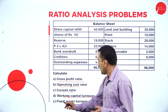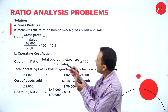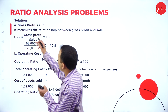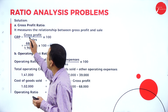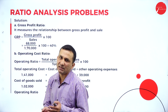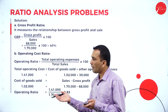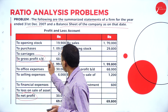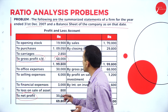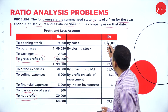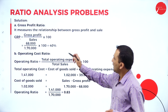The first one is the gross profit ratio. The formula is: gross profit ratio equals gross profit divided by net sales. The gross profit given in the question is 68,000.